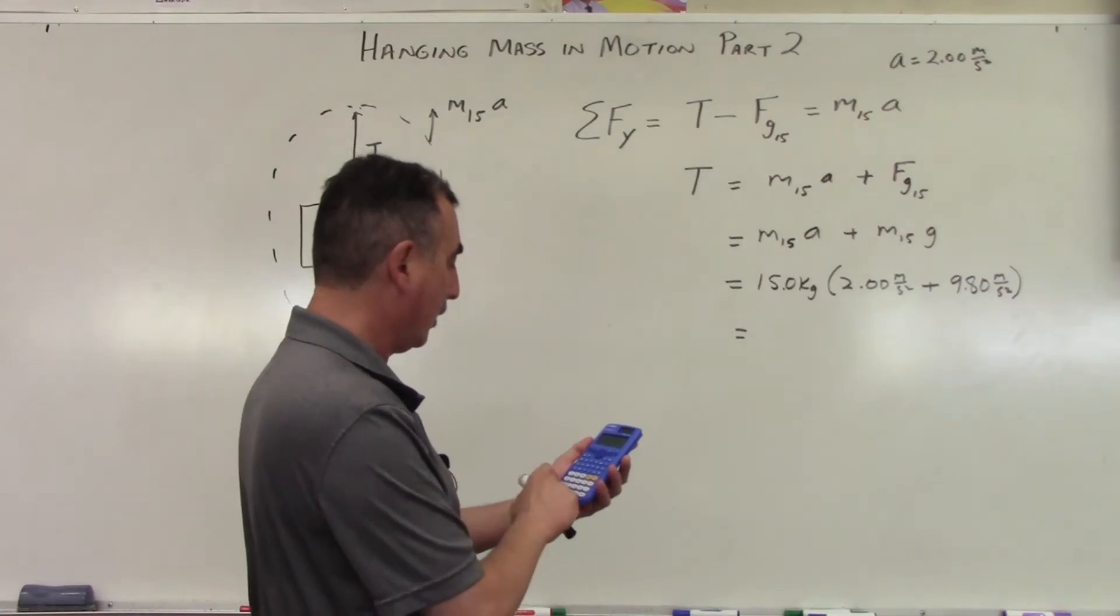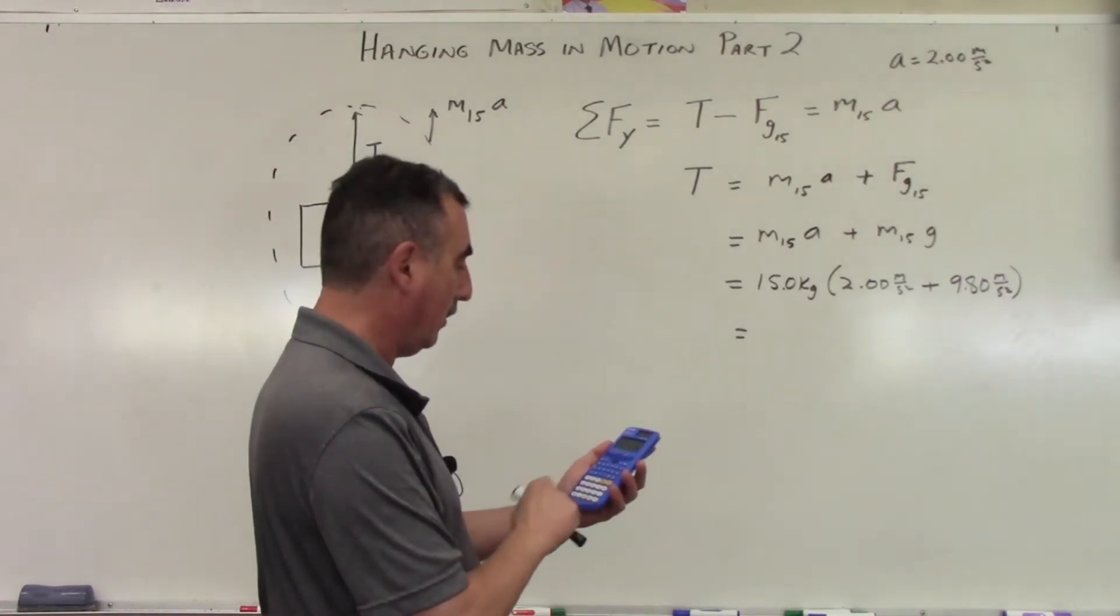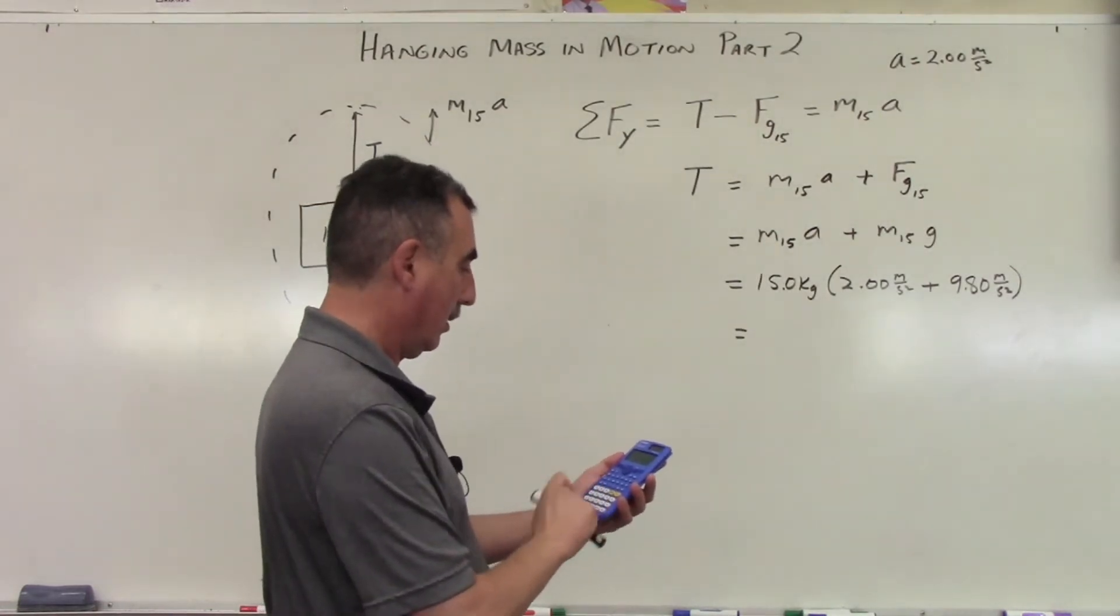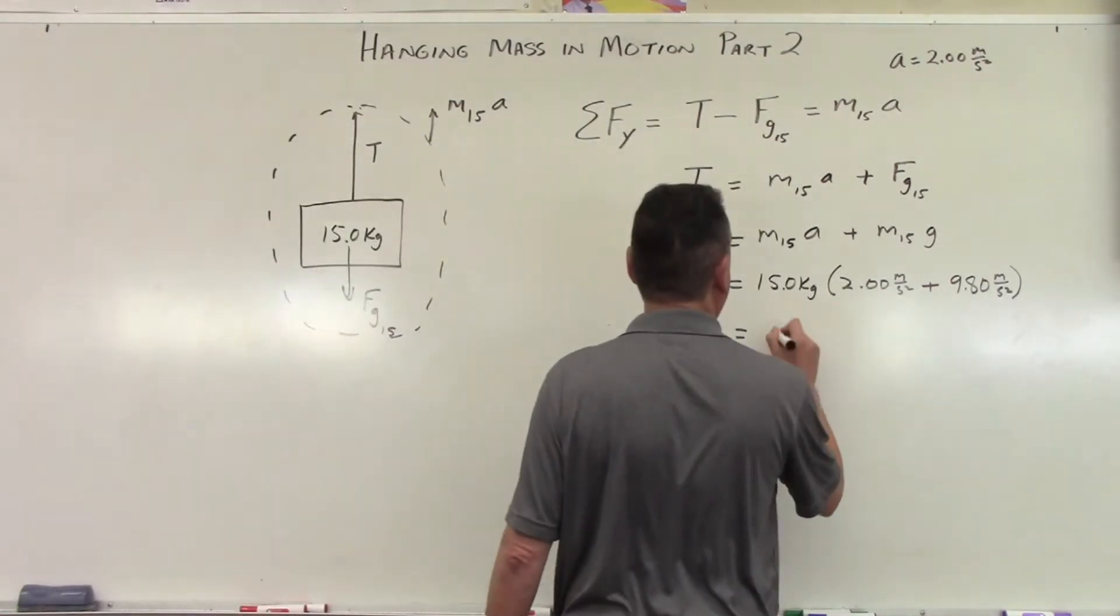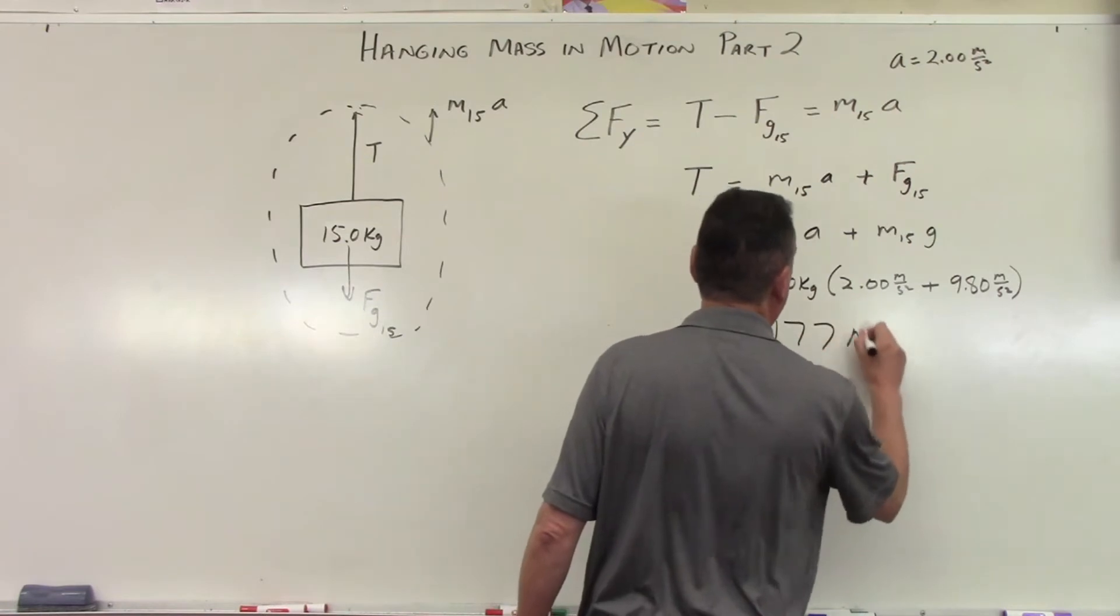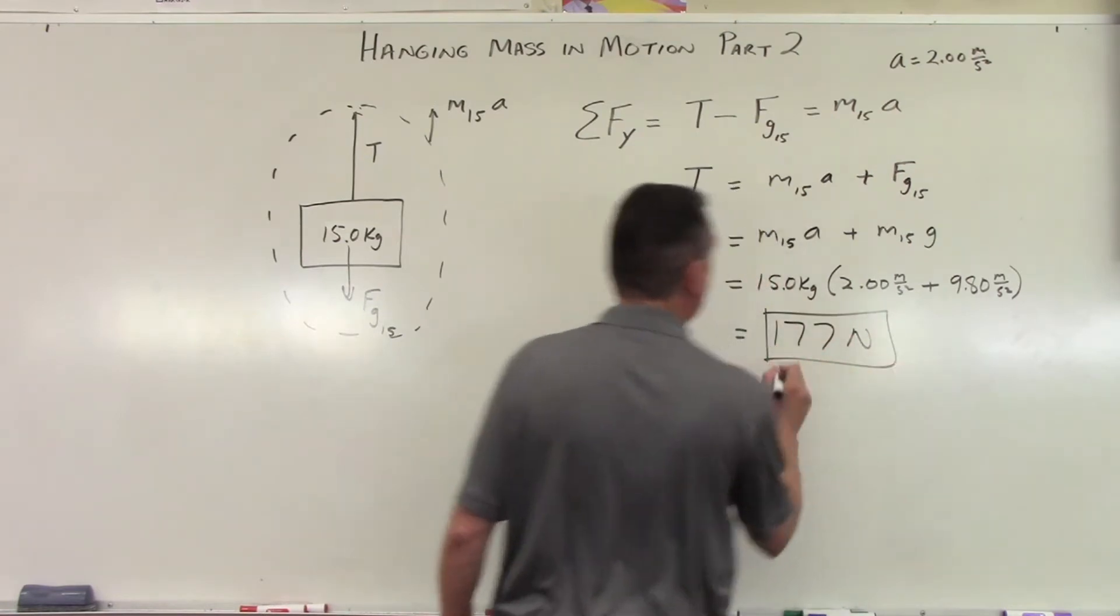Let's pull out the calculator and take a look. So that's going to be 15 times 11.80. So 177 newtons. And that's your answer.